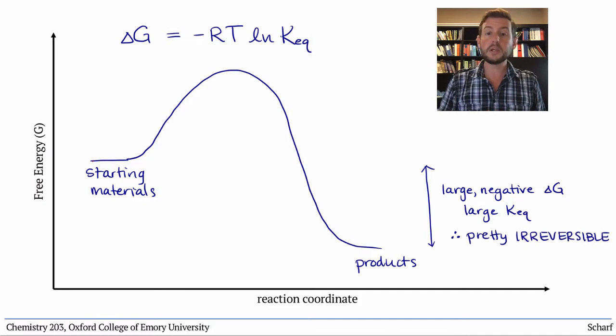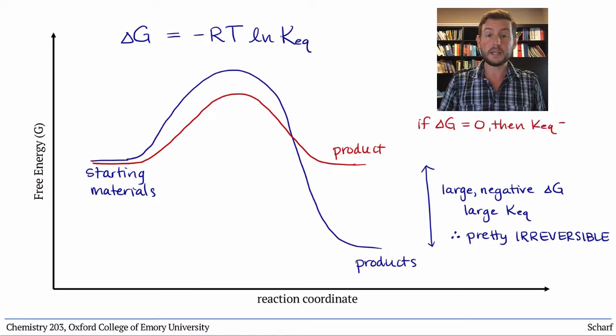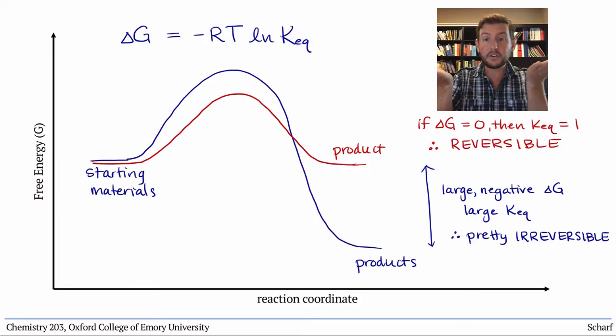A purely perfectly reversible reaction has an equilibrium constant of 1, and therefore delta G of 0. The starting materials and products have identical free energies.